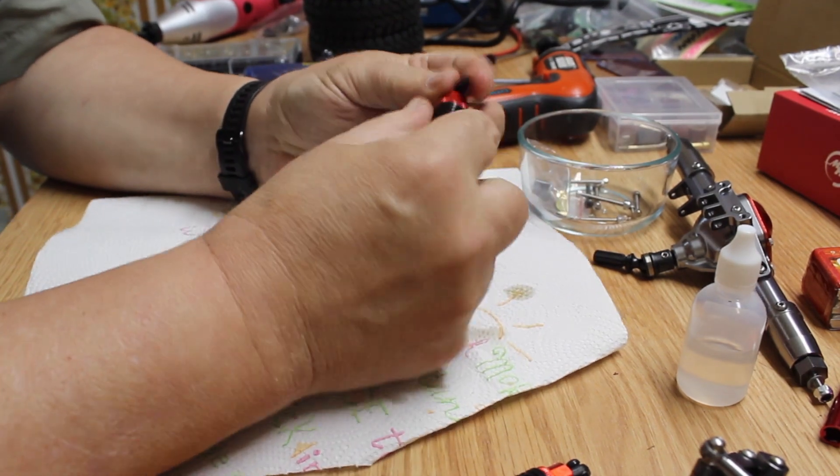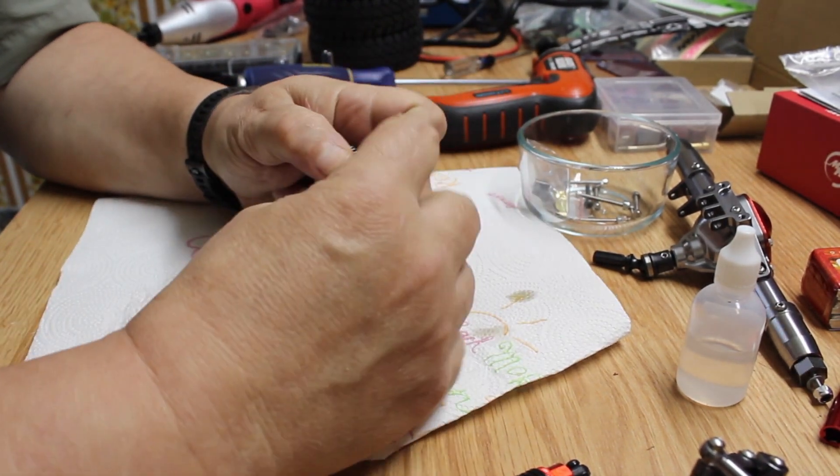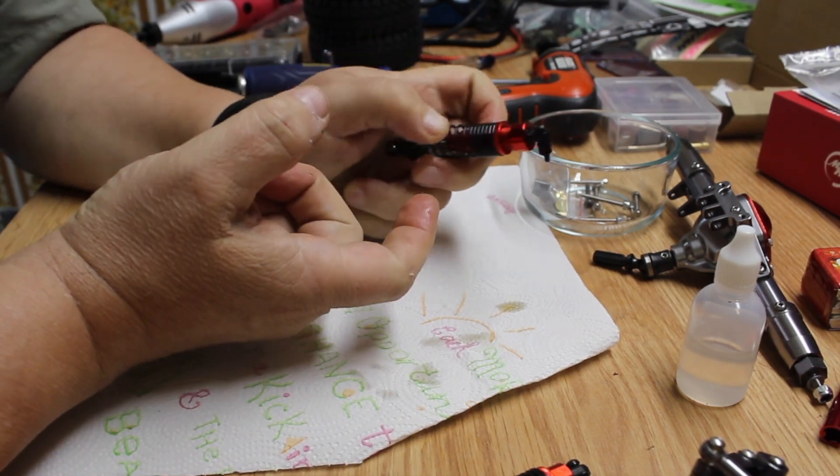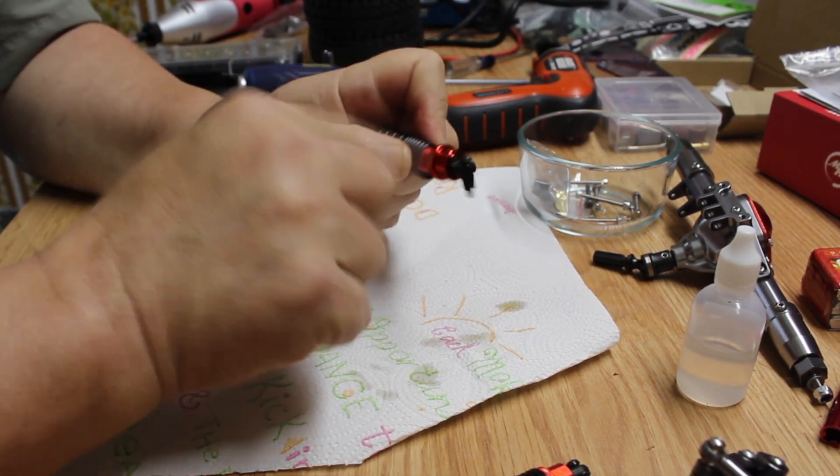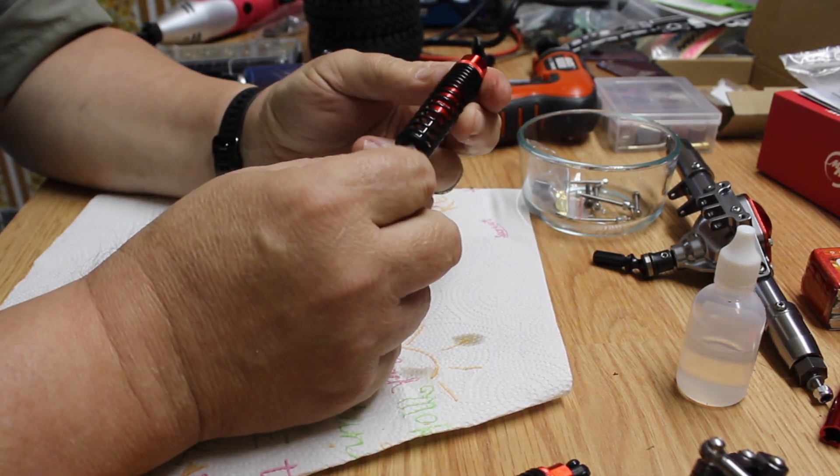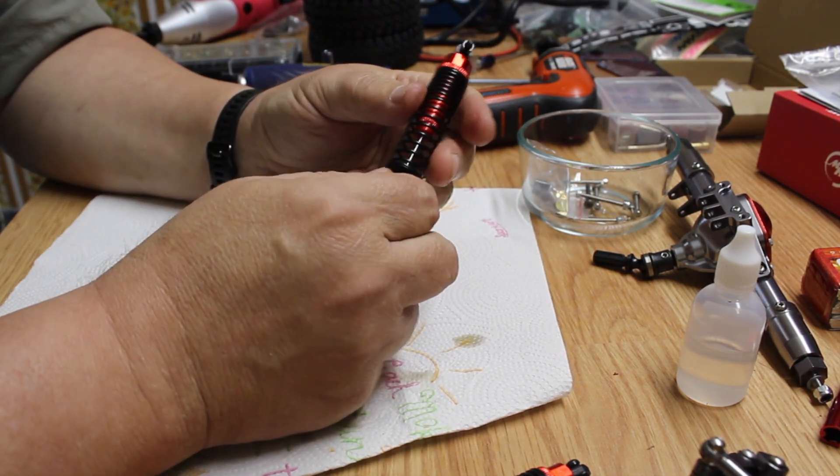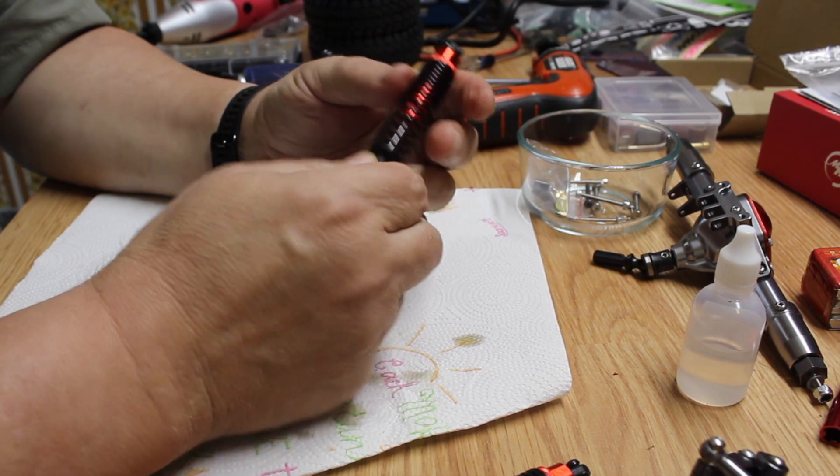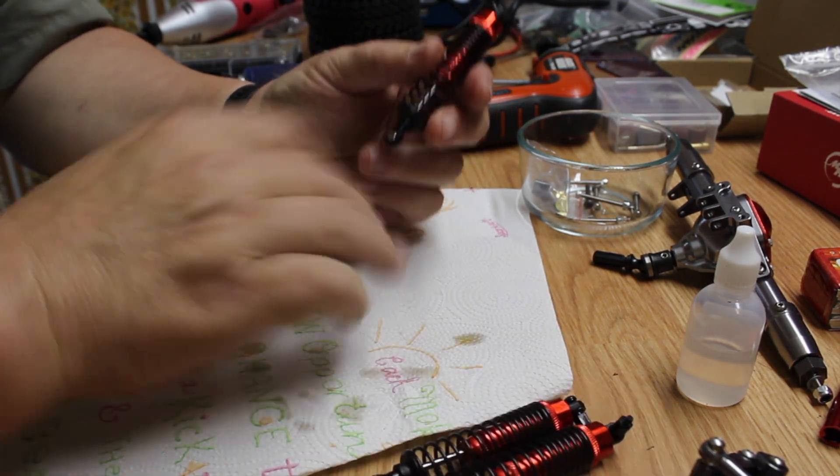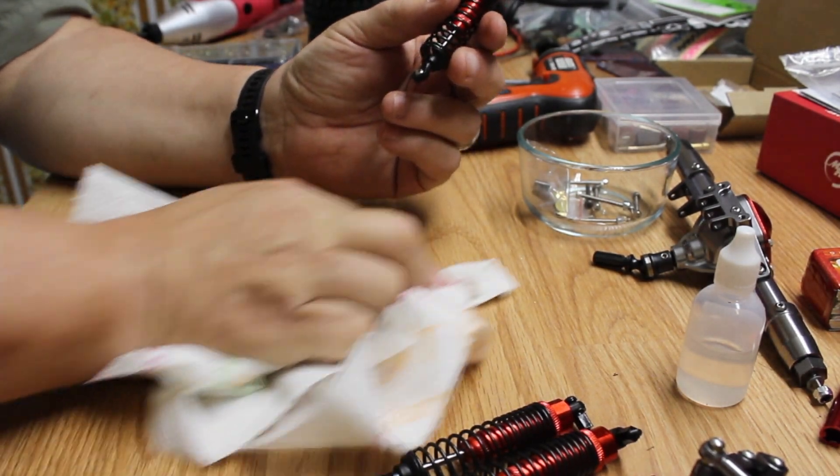These shocks do have an adjustment on them - you can put a preload on them by spinning this little adjustment wheel, they're threaded. I like the looks of them, these are considered big bore shocks. I notice a lot of rock bouncers do not have big bore shocks.